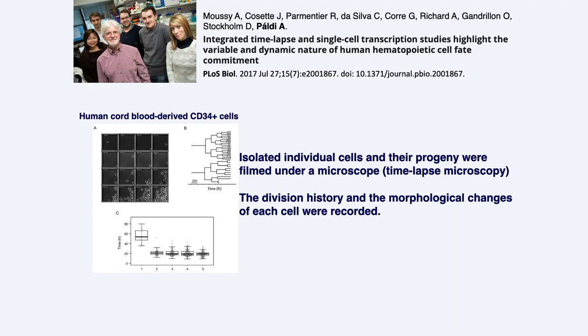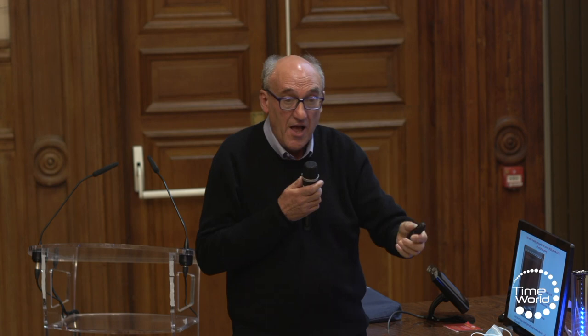In their study, they not only analyzed gene expression, but they also followed cells under a microscope and filmed them. The division history and the biological changes of cells that had been triggered to differentiate were recorded. Globally, they observed great heterogeneity of behavior of each cell. Notably, cells switch randomly phenotype before becoming stably differentiated, stably committed to a differentiation pathway. I'm going to show you a movie of this experiment. You are going to see cells that are triggered to differentiate and that, instead of following a straightforward pathway toward differentiation, hesitate between different types.